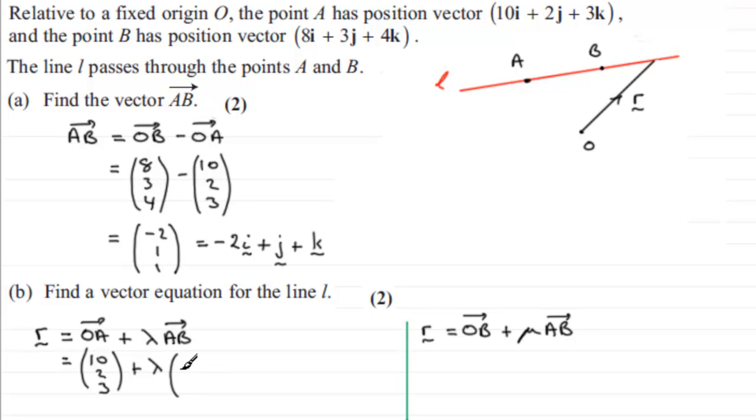and then plus lambda in the direction A to B which we got as minus 2 1 1 so put that in as minus 2 1 1. You could if you want to just leave it like that, that's very acceptable. You could write it out in row form 10i plus 2j plus 3k plus lambda times all of minus 2i plus j plus k